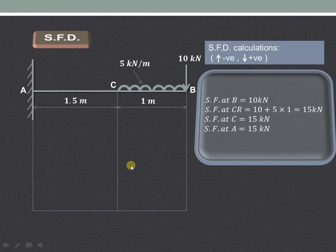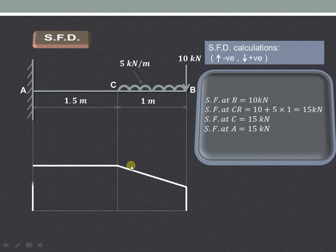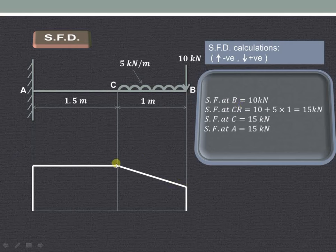Using these values we can draw the shear force diagram. At point B it is 10 kN, at point C it is 15 kN, and at point A it is also 15 kN.